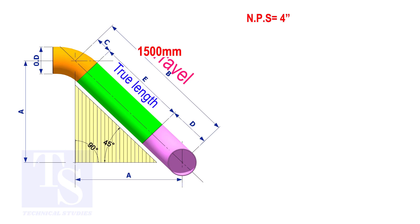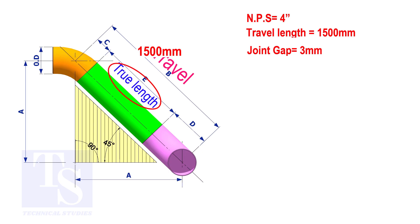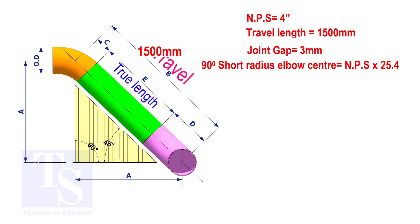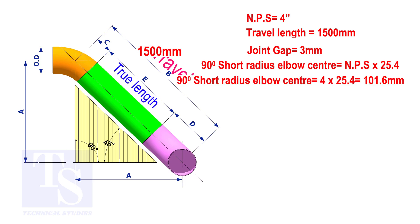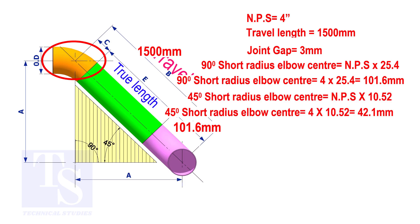Nominal pipe size is 4 inch. The travel length is 1,500 millimeters and the joint gap is 3 millimeters. To calculate the elbow center of a 90 degree short radius elbow, multiply the nominal pipe size by 25.4. The answer is 101.6 millimeters. To calculate the elbow center of a 45 degree short radius elbow, multiply the nominal pipe size by 10.52. The answer is 42.1 millimeters.